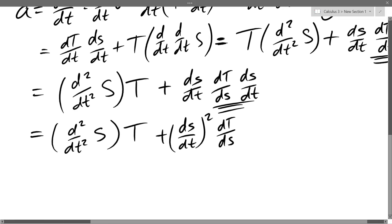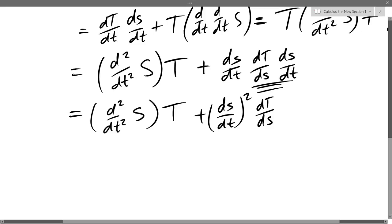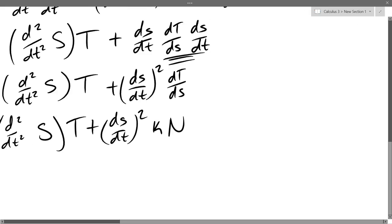Somewhere dT/ds is supposed to be kappa N. So somewhere, if we flip around to the notes, T plus ds/dt squared kappa N. So we'll flip back somewhere and make sure that that's right. That's the curvature. Yeah. So dT/ds is supposed to be kappa times N. Alright. So this is a good place to stop.